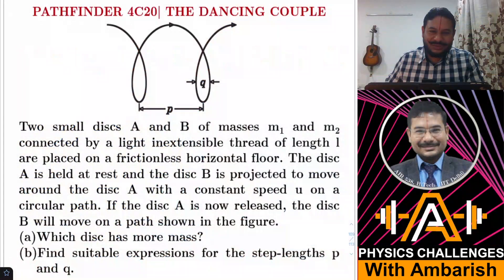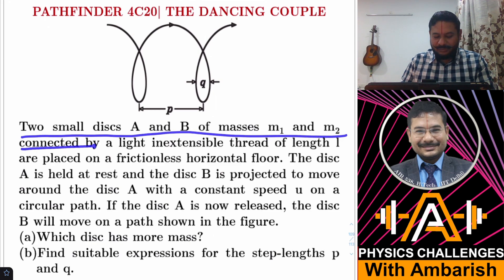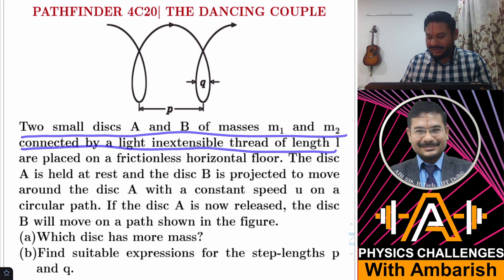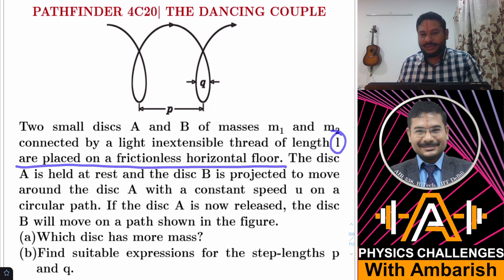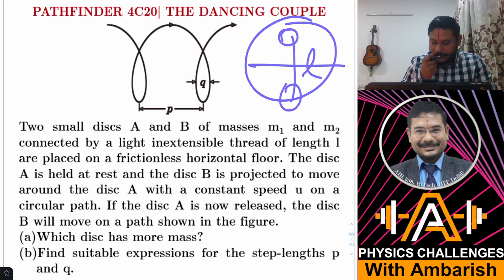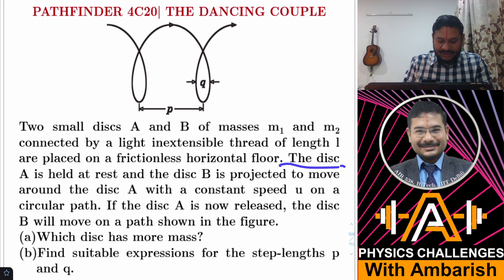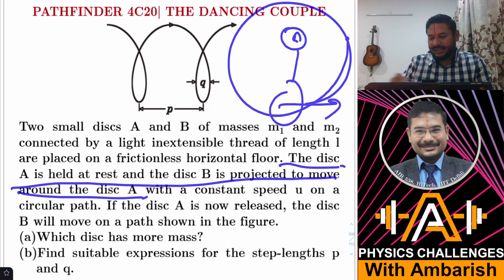Without much ado, let me get straight into the problem. Two small disks A and B of masses m1 and m2, connected by a light inextensible thread of length l, are placed on a frictionless horizontal floor. So there are two disks connected by a thread of length l, placed on a frictionless horizontal floor. Disk A is held at rest and disk B is projected to move around disk A.